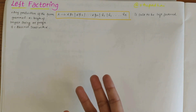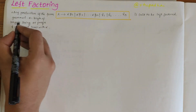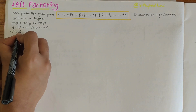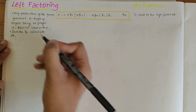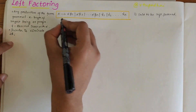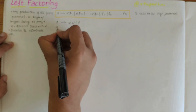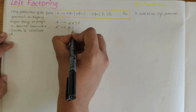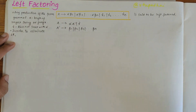Left factoring is important because a top-down parser does not accept a grammar which is not left factored. So in order to eliminate the left factoring, we need to apply the following two rules: A derives alpha A' gamma, and A' derives beta1 | beta2 | beta3 | ... | beta_n.